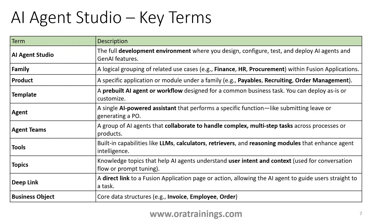Business Objects represent the data structure or data model for a specific component. For instance, if you want to retrieve purchase order details for a specific person, you configure the appropriate web service or business object to fetch that information. These are the key terminologies of Agent Studio in Oracle Fusion ERP.